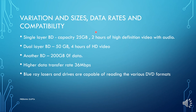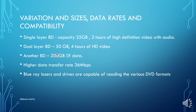The second feature is variation in size, data rates, and compatibility. There are two kinds of Blu-ray disc: single layer with 25 GB capacity supporting two hours of high definition video with audio, and dual layer with 50 GB capacity supporting four hours. A future Blu-ray disc under development will have 200 GB of storage. The data transfer rate is also high at 36 Mbps. Blu-ray lasers and drives are also compatible with and capable of reading various DVD formats.